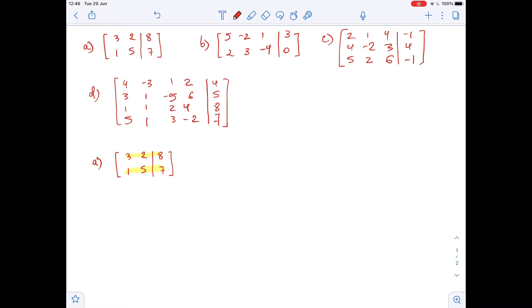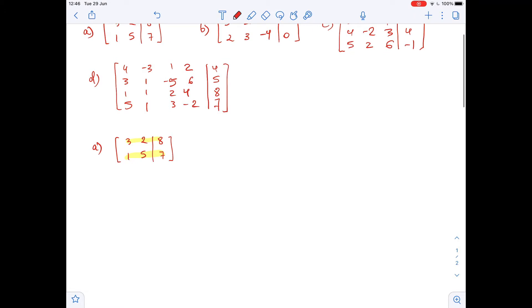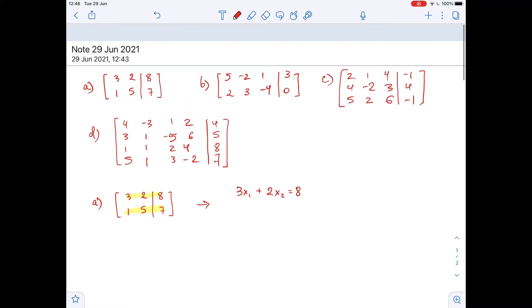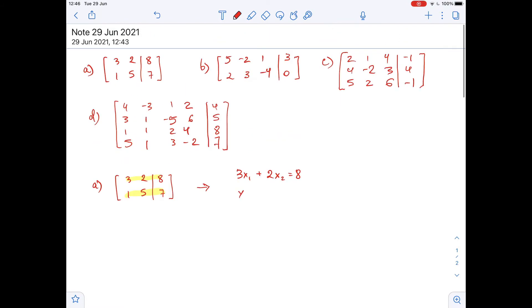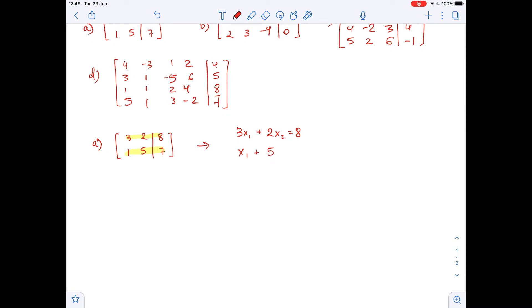So we can write it down that this matrix represents the system where 3x1 plus 2x2 equals 8. So this equation we get from the first row, and x1 plus 5x2 equals 7. This equation is given by the second row of the matrix.